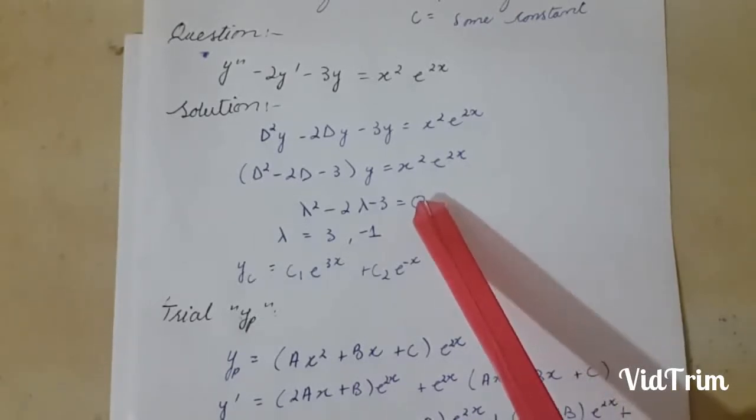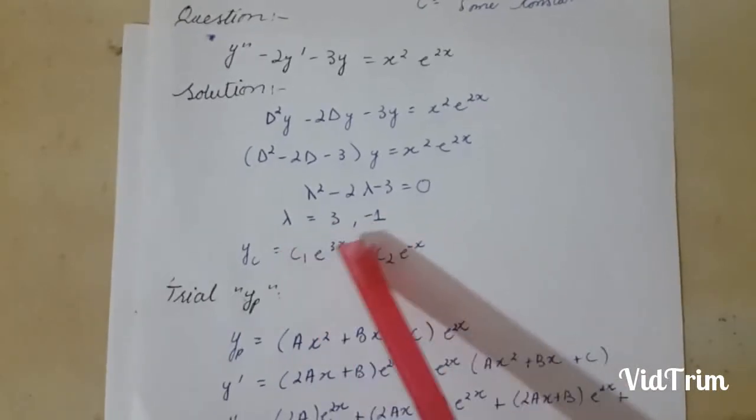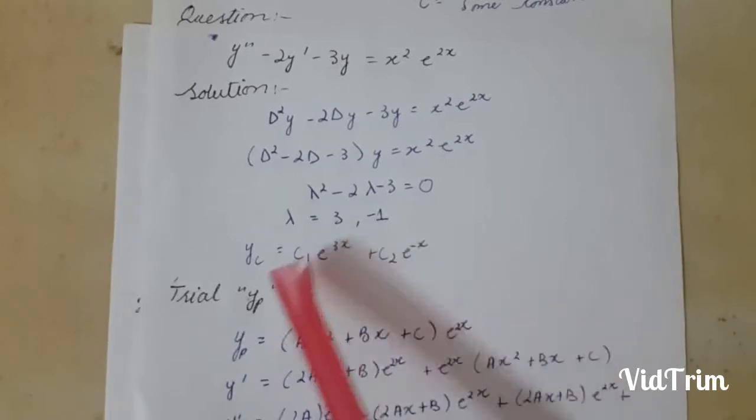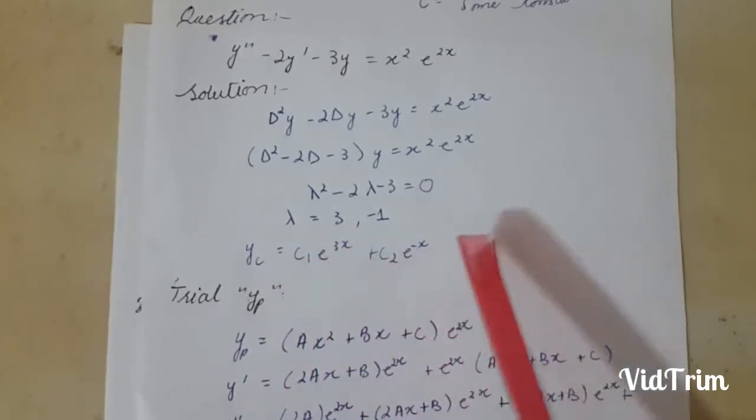And we will find our roots. Here the roots equal 3 and minus 1. So our yc equals c1 e^(3x) plus c2 e^(-x).